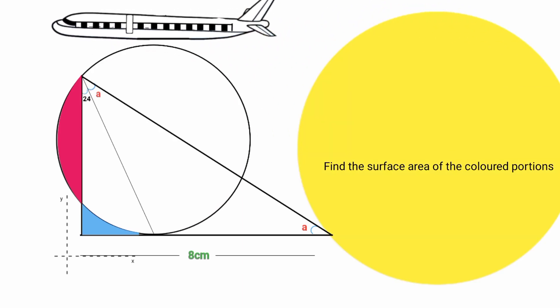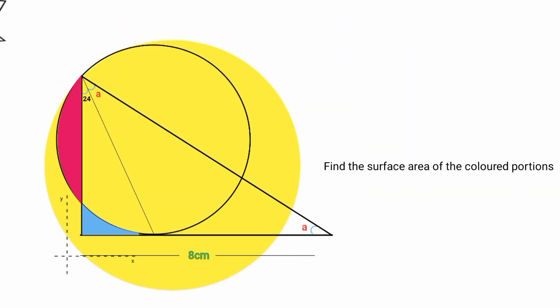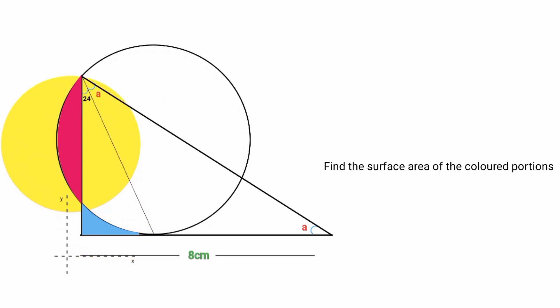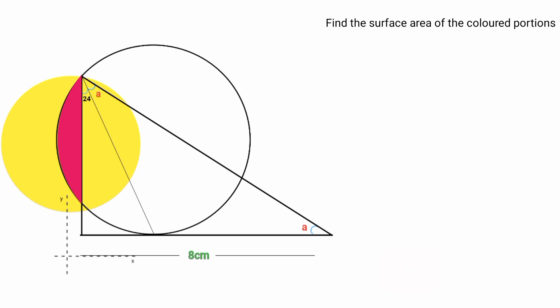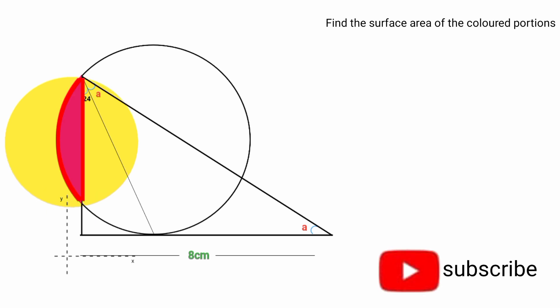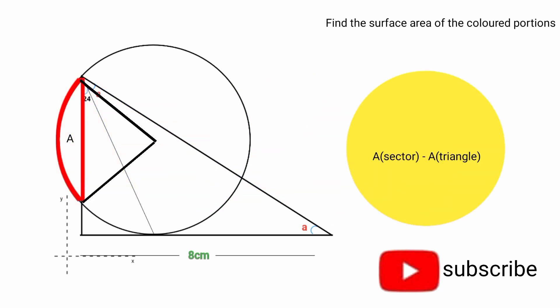We are asked to find the surface area of the colored portions — the blue portion and the pink portion. Let's start with the pink colored portion. The pink portion is segment A. We know that the surface area of a segment can be found using the formula: area of sector minus area of triangle, equated to segment A.